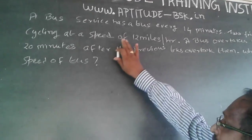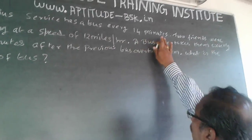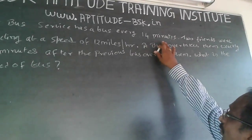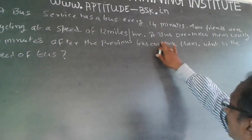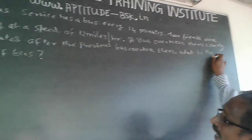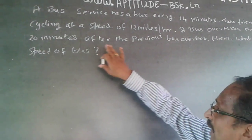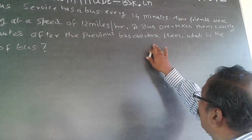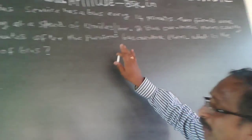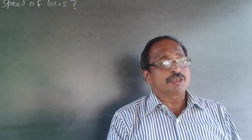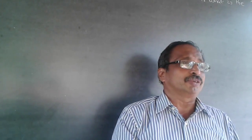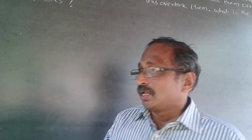The question is: a bus service has a bus every 14 minutes. Two friends were cycling at a speed of 12 miles per hour. A bus overtakes them exactly 20 minutes after the previous bus overtook them. What is the speed of the bus? This is a classic question on speed, time, and distance.